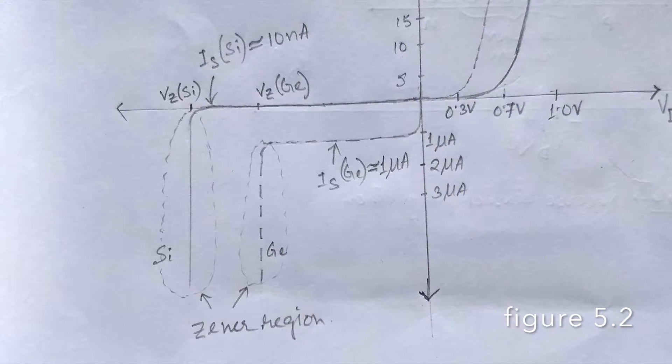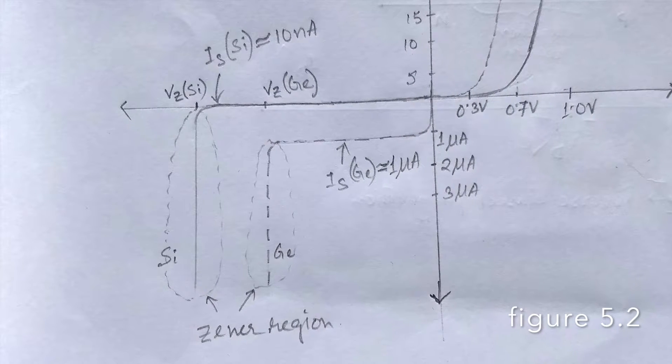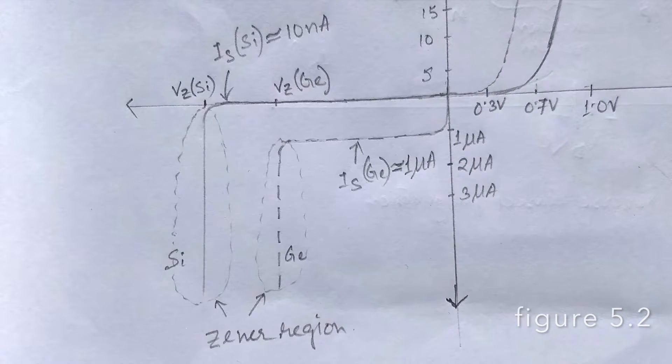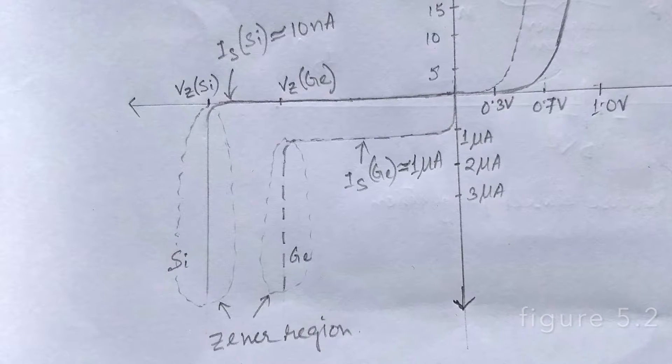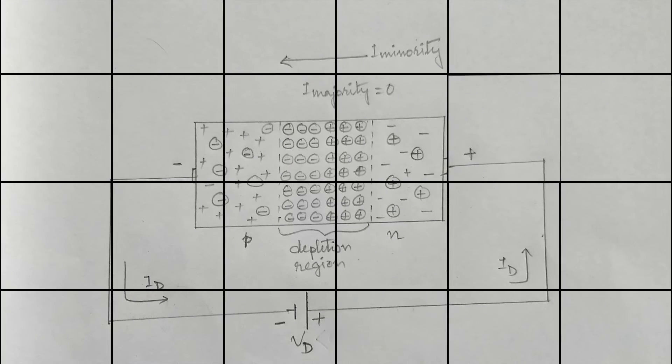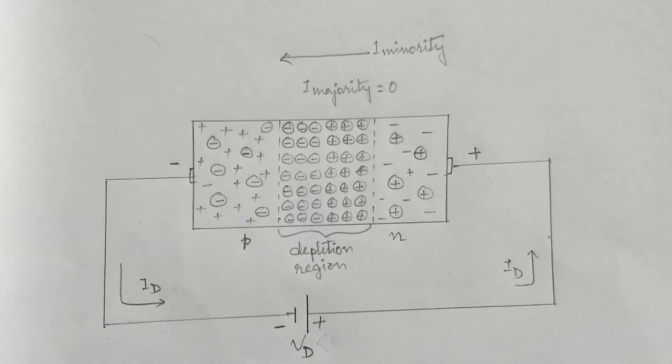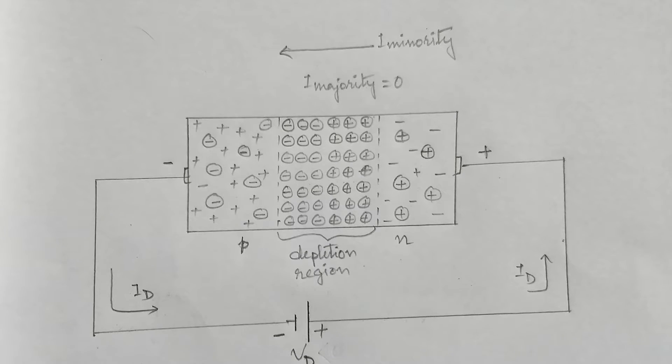The reverse potential which results in sharp increase in current, as shown in this figure, is known as Zener potential denoted by Vz. Vz can be decreased to a very low level such as minus 5 volts.